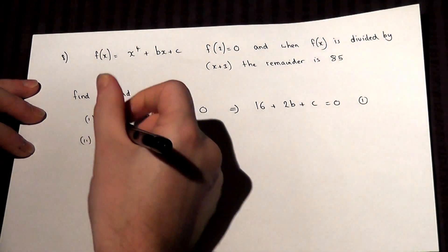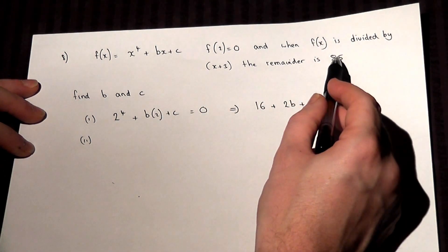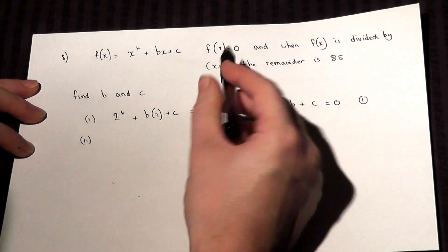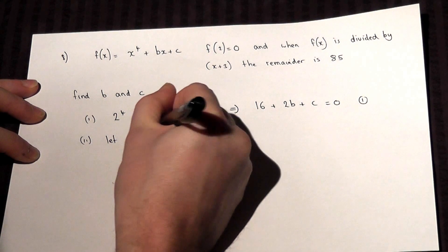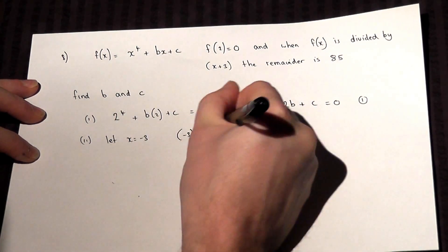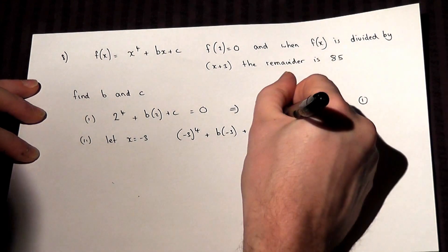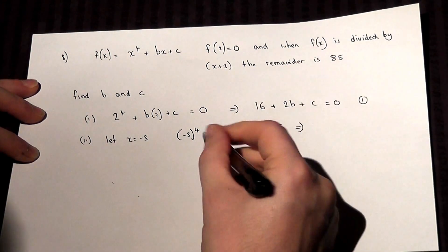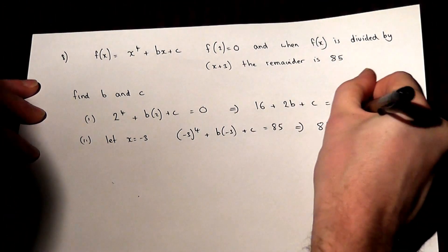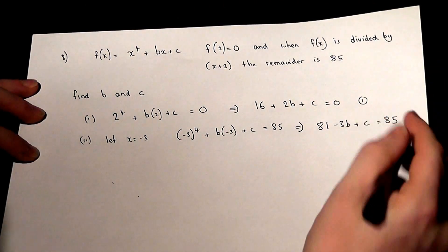Now in part 2, if we divide this expression by x plus 3, the remainder is 85. What this means is that if we let x equal minus 3 — and this is called the remainder theorem — and put this into the function, so minus 3 to the power of 4 plus b lots of minus 3 plus c, that will equal the remainder, which is 85. So minus 3 to the power of 4 is 81, take away 3b, plus c will equal 85. That's equation 2.